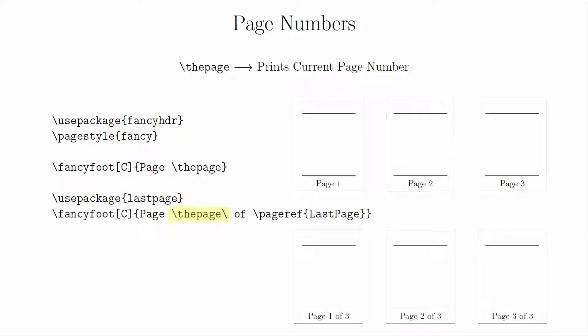You will notice that in the code for the footer there's a backslash followed by a space after \thepage. What that extra backslash does is explicitly tell LaTeX that you want a space after displaying the value. This can also be done with curly brackets, but it's more common in this context to use the backslash.